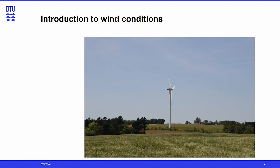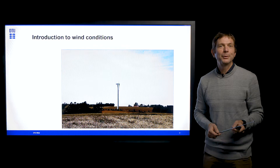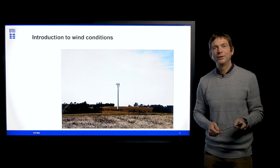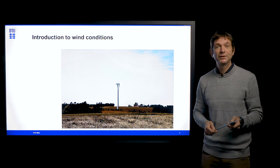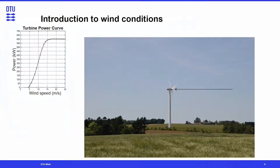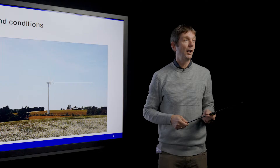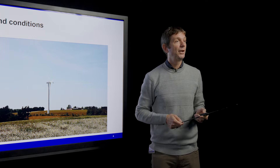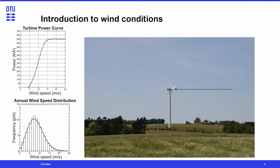Here we have a picture of a wind turbine in a landscape. What do we need to know about wind conditions in order to put this wind turbine in the right place and to choose the right wind turbine? The first thing we need to know is the wind speed at the hub height of the turbine, because that determines the production. Every wind turbine has a power curve, and with that power curve we can relate the wind speed at hub height to a power production. If we know the annual distribution of wind speeds at that hub height and location, we can work out the annual production. So the first thing we would like to know is the annual wind speed distribution.